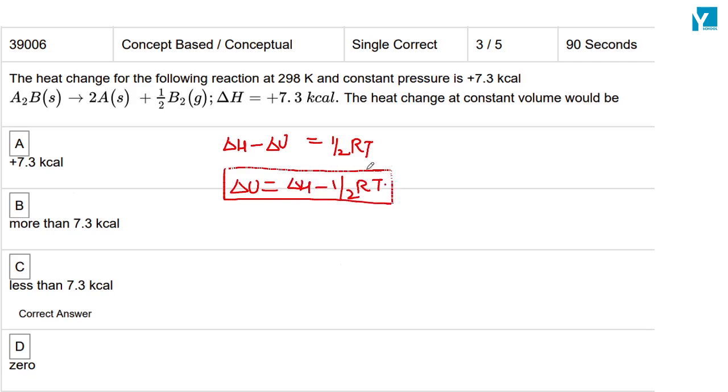So here we have delta U at constant volume will be less than 7.3, because delta H is 7.3. So delta U will be less than delta H.